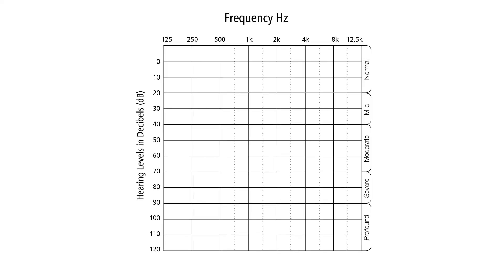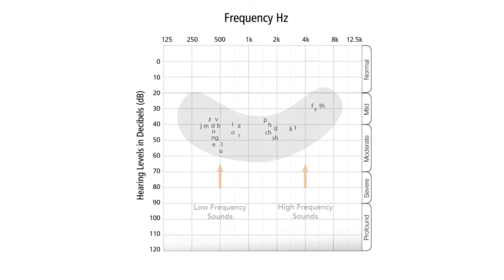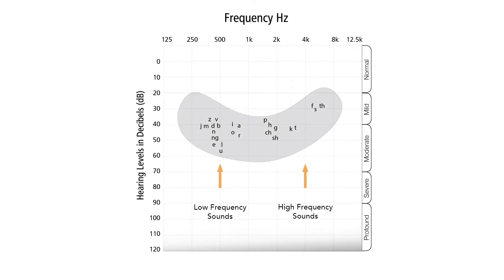The speech zone is the area of the audiogram that uses nearly all of the alphabet to determine how loud or how soft your ears can perceive speech. Vowels such as A, E, I, O, and U would fall on the left side, as they are usually softer when being heard. The consonants, however, are usually perceived as much higher in the speech zone, and therefore would appear on the right side.